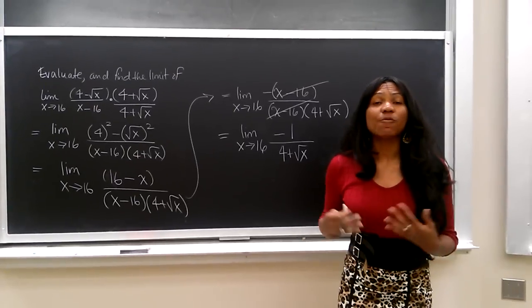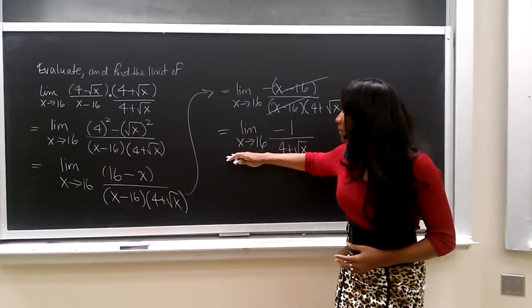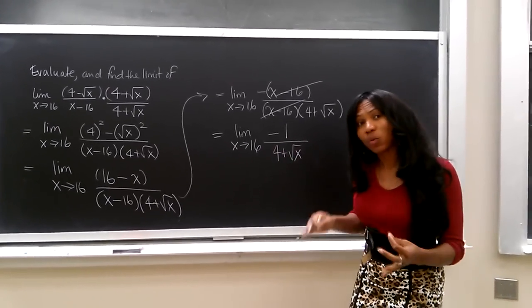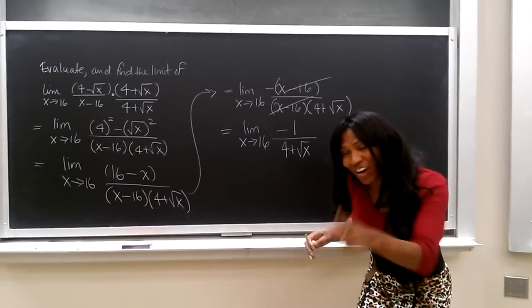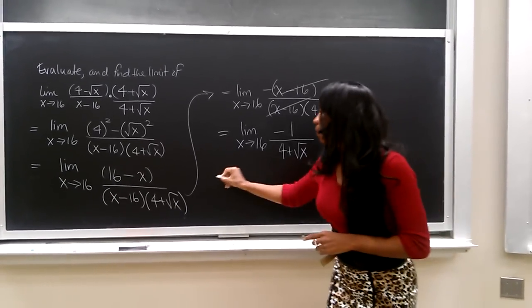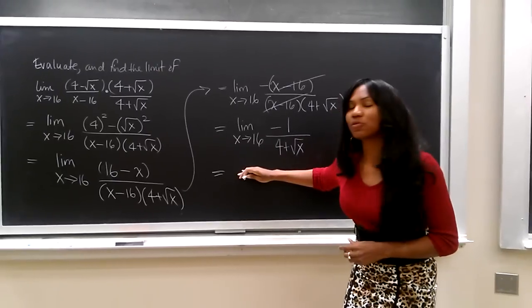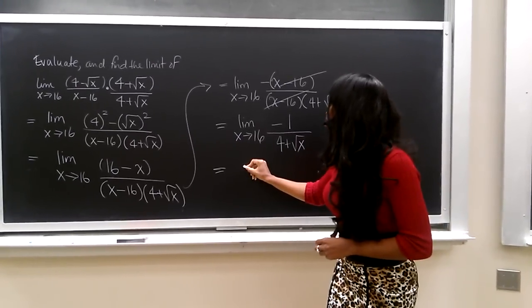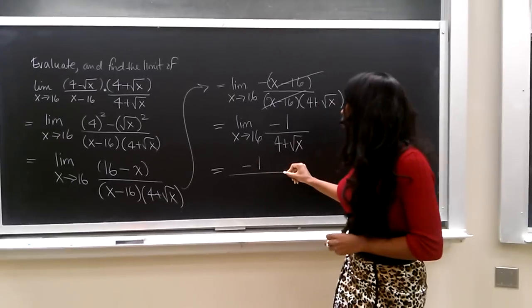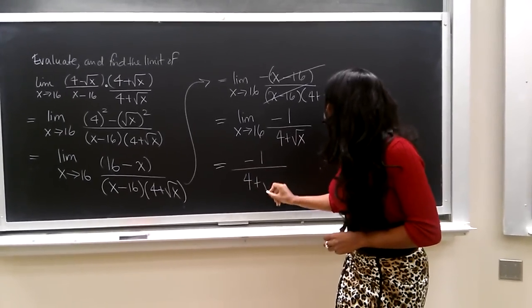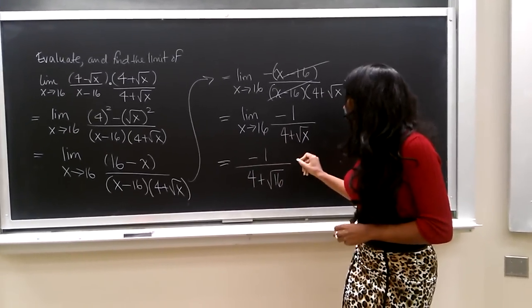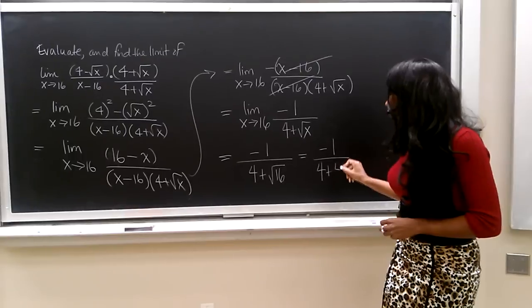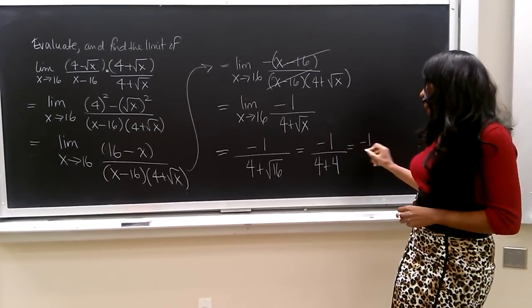Now, we can evaluate the limit by substituting x equals 16 in for x here. Finally, we are able to remove the limit sign. So, now this becomes negative 1 over 4 plus the square root of 16, and that simplifies to be negative 1 over 4 plus 4, and that is negative 1 over 8.